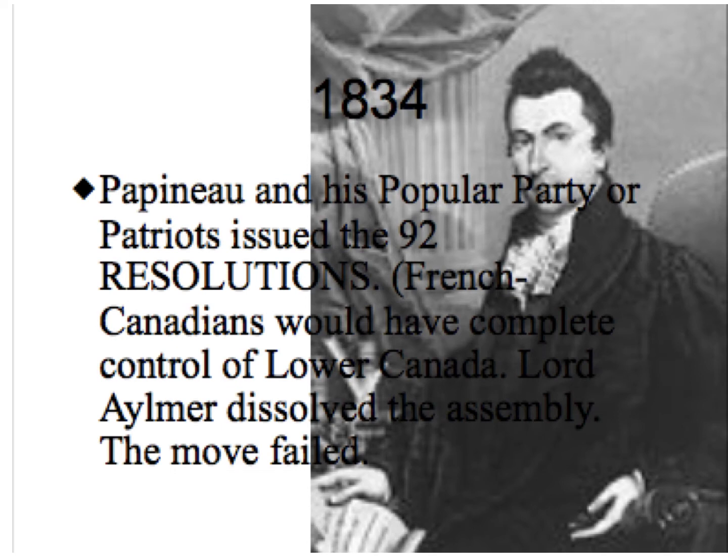In 1834, Louis-Joseph Papineau, the leader of the Popular Party, the Patriots, issued the 92 Resolutions, which essentially stated that French Canadians would have complete control of Lower Canada. The Assembly was dissolved.